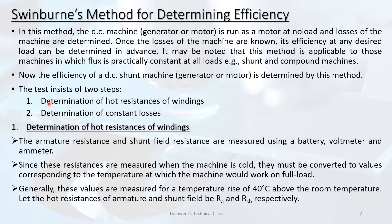The test involves two parts: determination of hot resistances of windings, and determination of constant losses. For the first part, the armature resistance and shunt field resistance are measured using a battery, voltmeter, and ammeter.